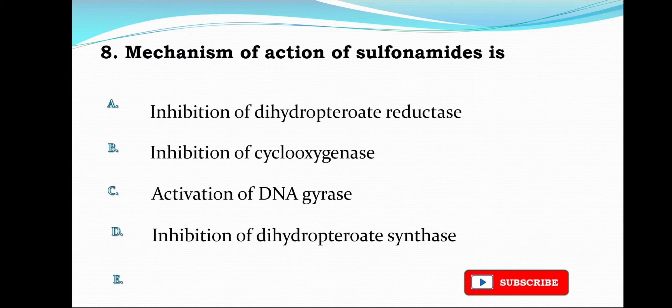Next question: The mechanism of action of sulfonamide is inhibition of dihydropteroate reductase, inhibition of cyclooxygenase, activation of DNA gyrase, or inhibition of dihydropteroate synthase. The correct answer is inhibition of dihydropteroate synthase, that is option D.